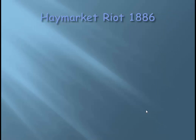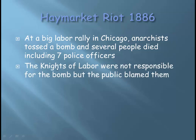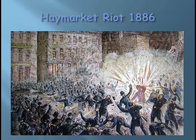The Haymarket Riot of 1886 went down in Chicago. A general labor protest was sponsored by the Knights of Labor — just a rally, a bunch of people getting together in Chicago. In this rally, somebody tossed a bomb, and several people died, including a couple of police officers. The Knights of Labor got the blame for throwing the bomb, and public opinion towards that labor union went way south. The message got lost because of the bomb and the dying policemen. In the end, the workers did not get their eight-hour workday, eight hours of rest, or higher pay — they got absolutely nothing.